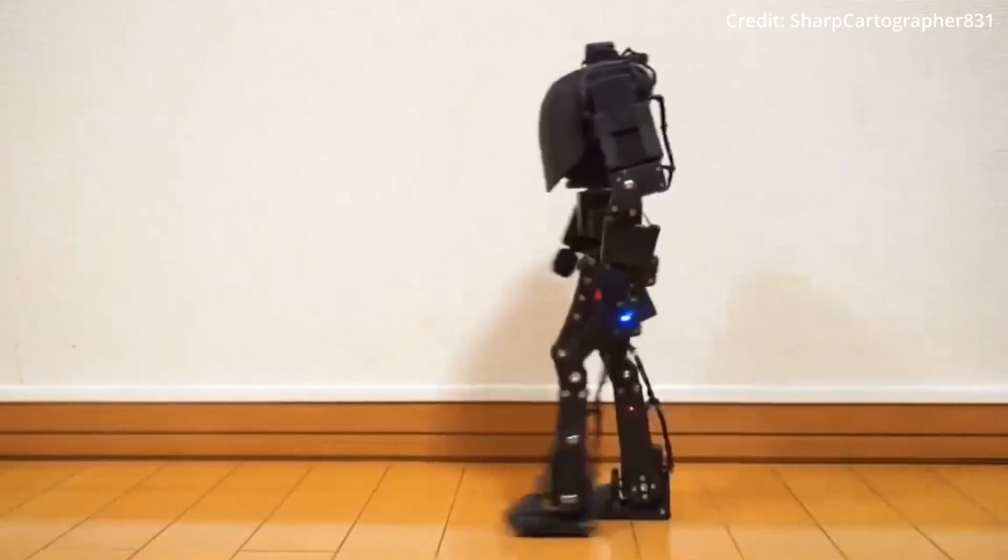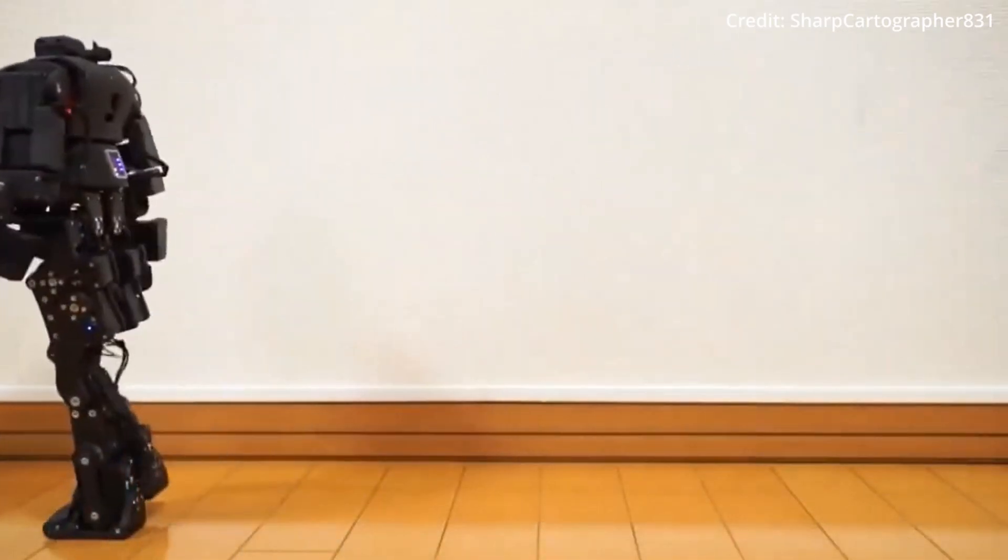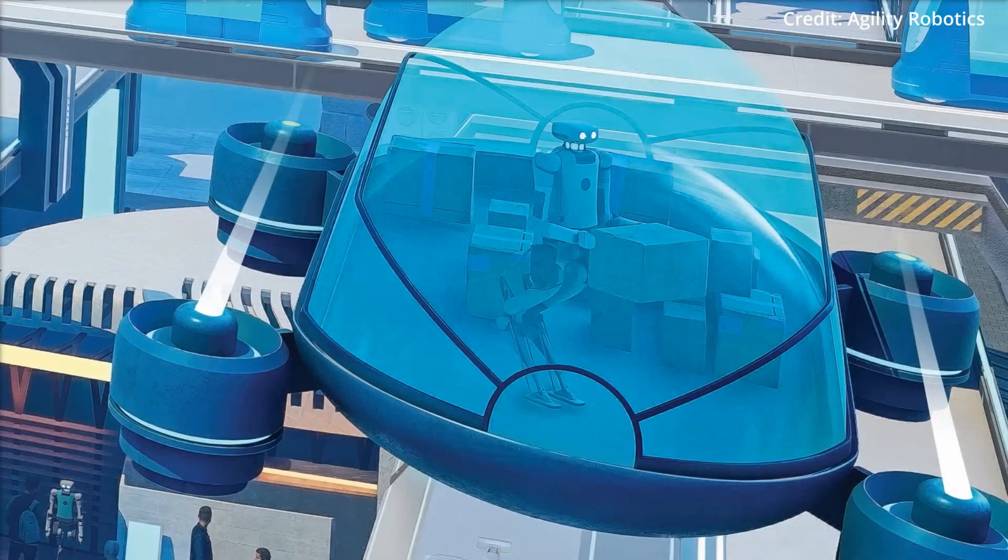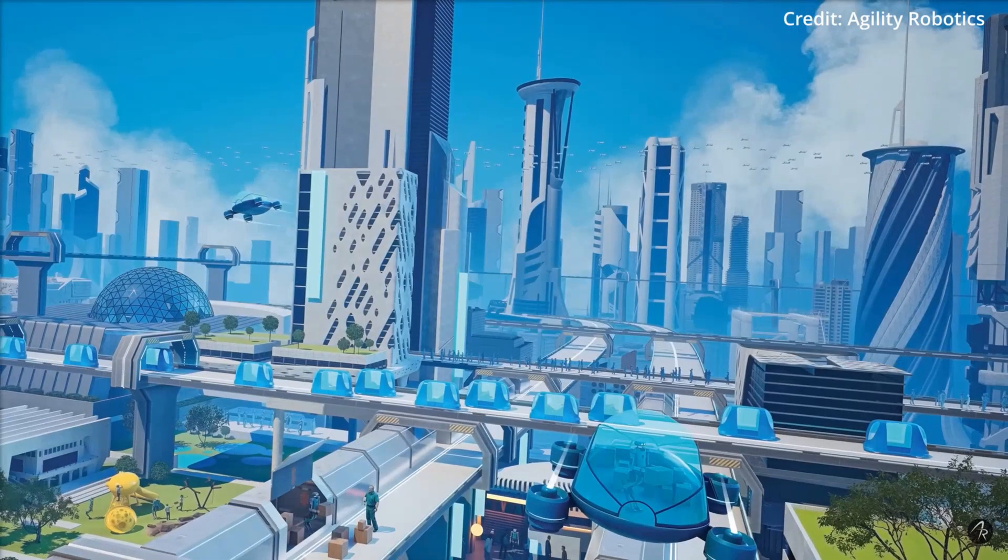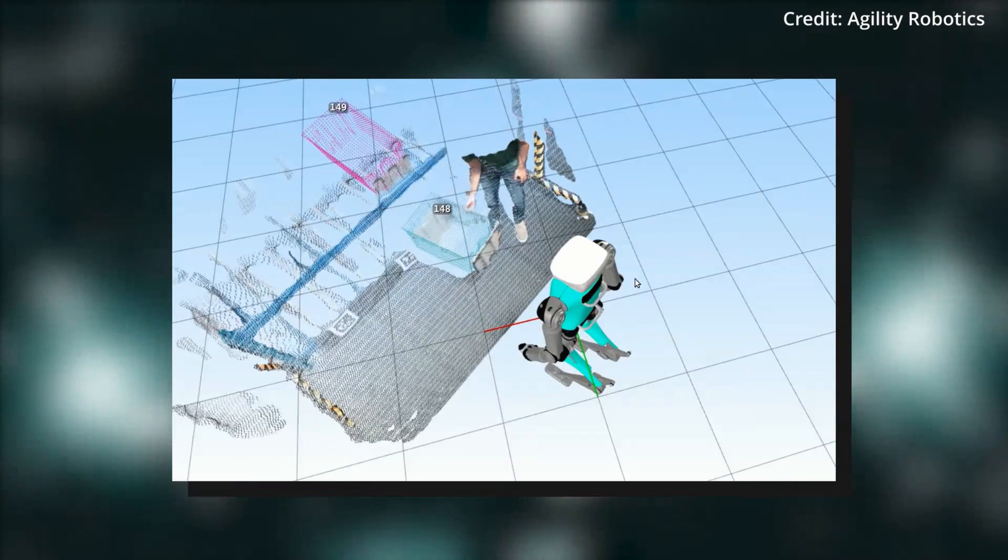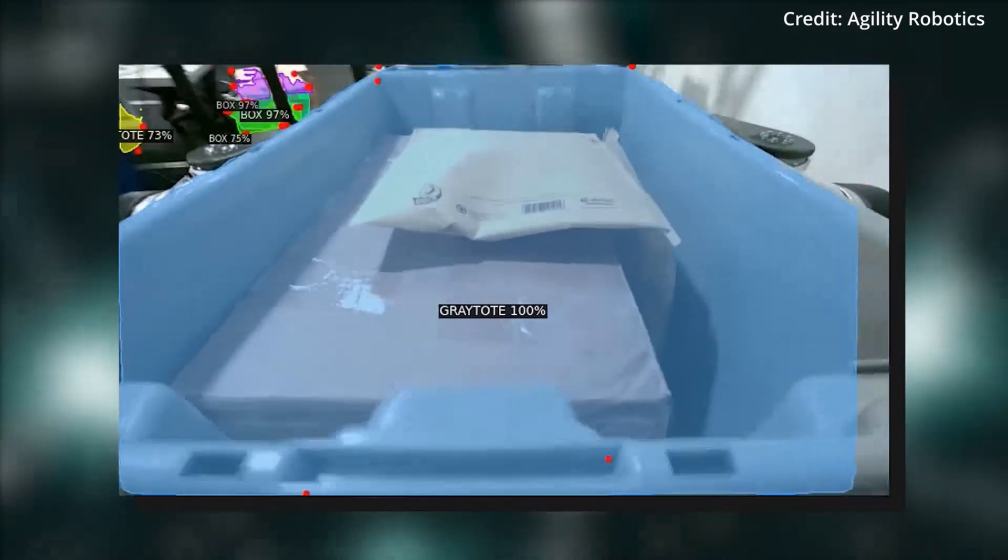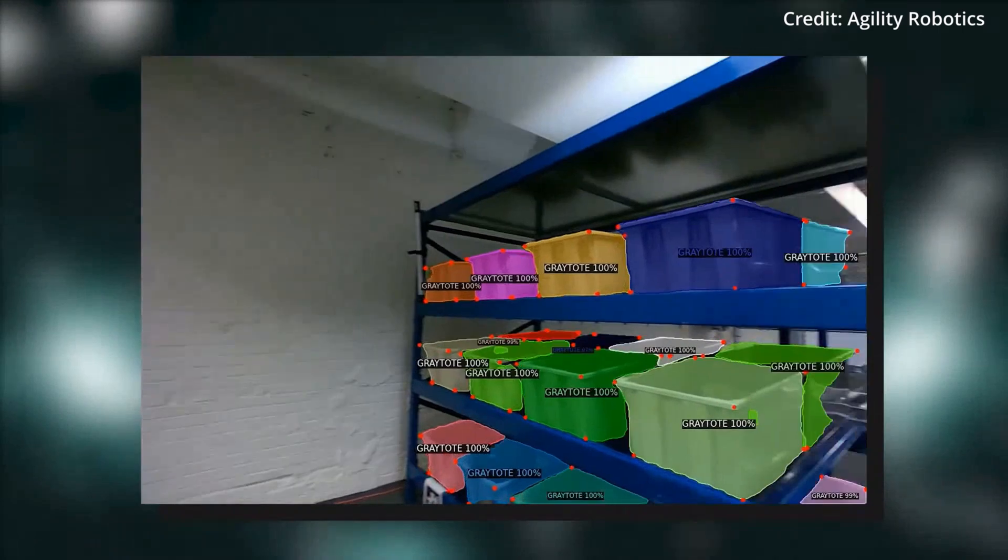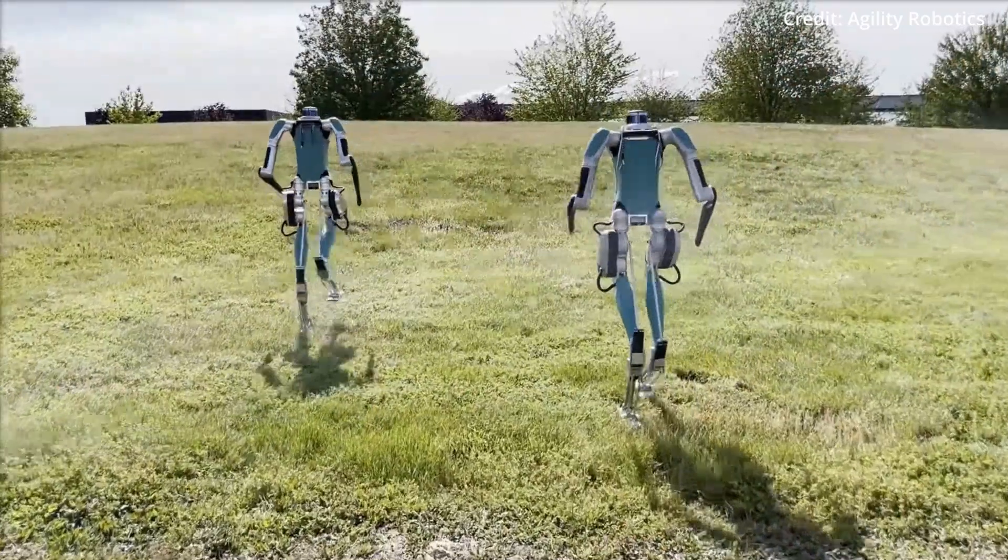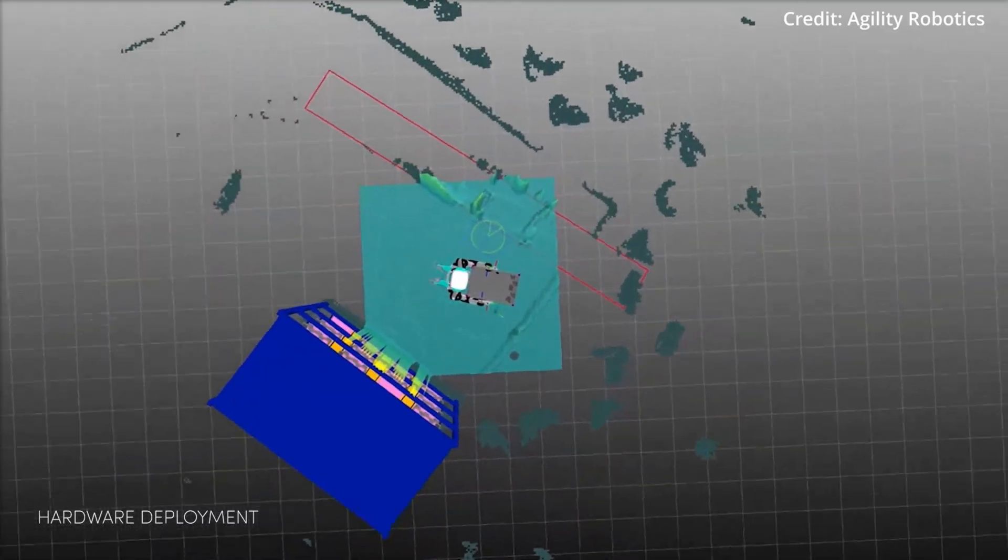Meanwhile, there are still concerns regarding humanoid robots taking human jobs, but Agility Robotics says they envision Digit as a facilitator rather than a replacement. Therefore, Digit is intended to be perceived as a harmonious collaborator that fills work roles that are typically less favored, repetitive or more dangerous in order to increase safety and convenience at the workplace.